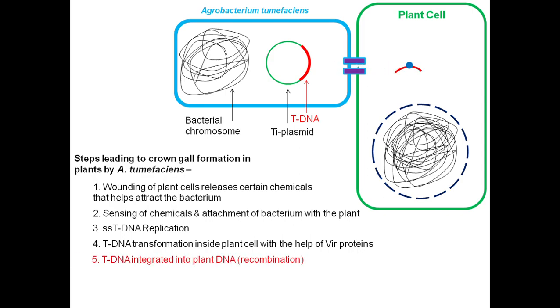Now, this T-DNA, once it is inside the plant cell, gets integrated into the plant DNA. We call this process as recombination, or illegitimate recombination.